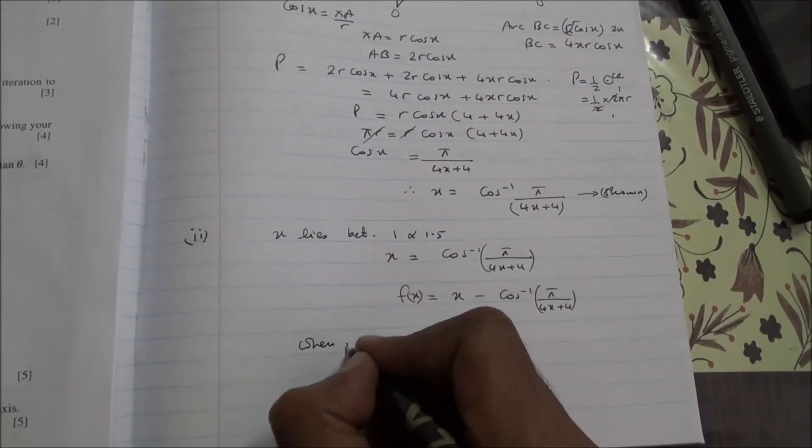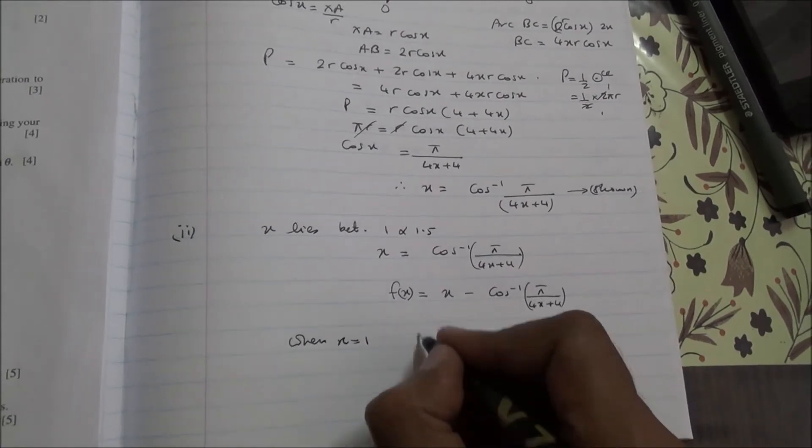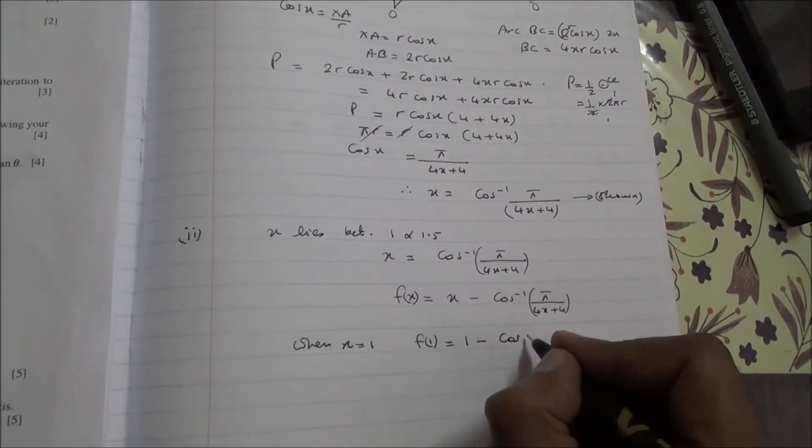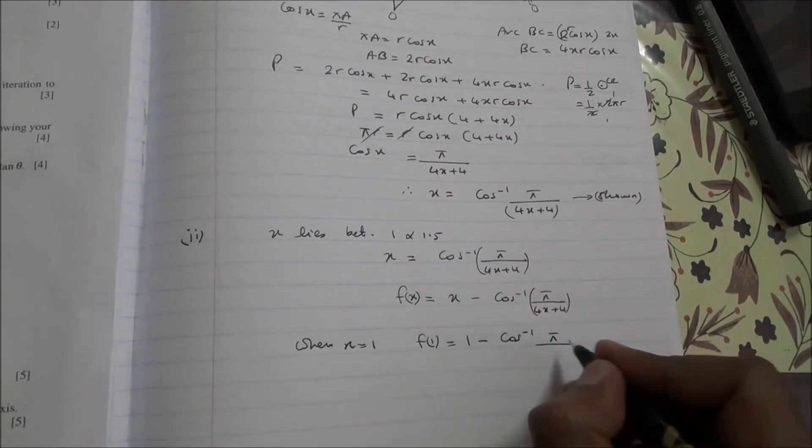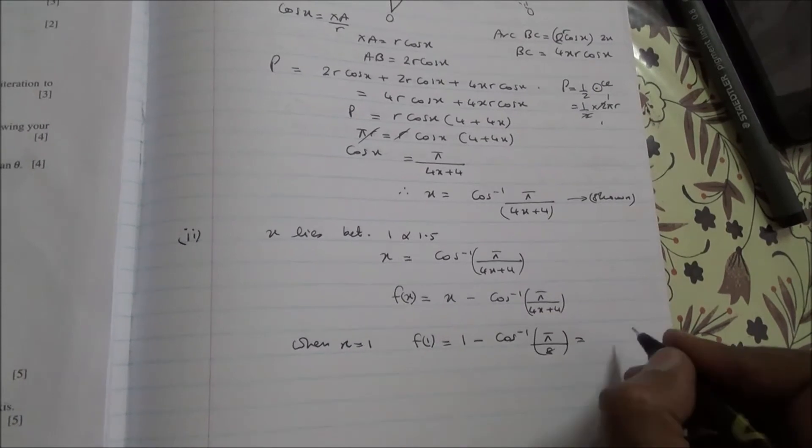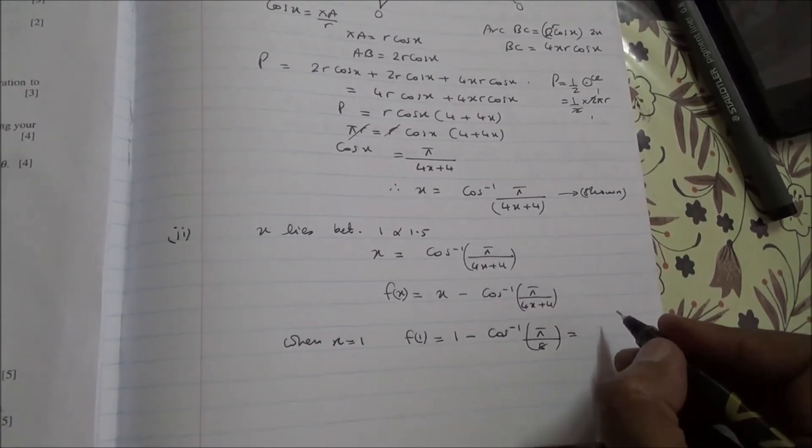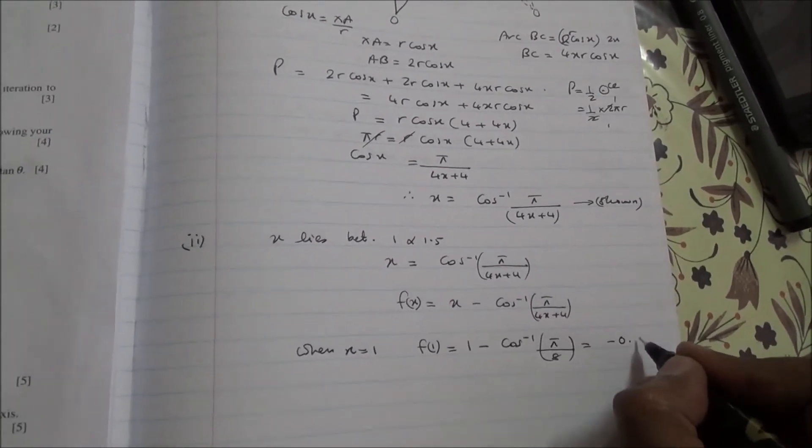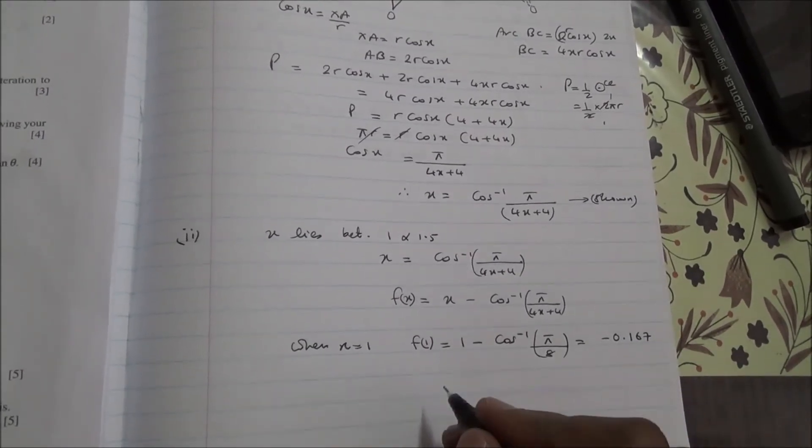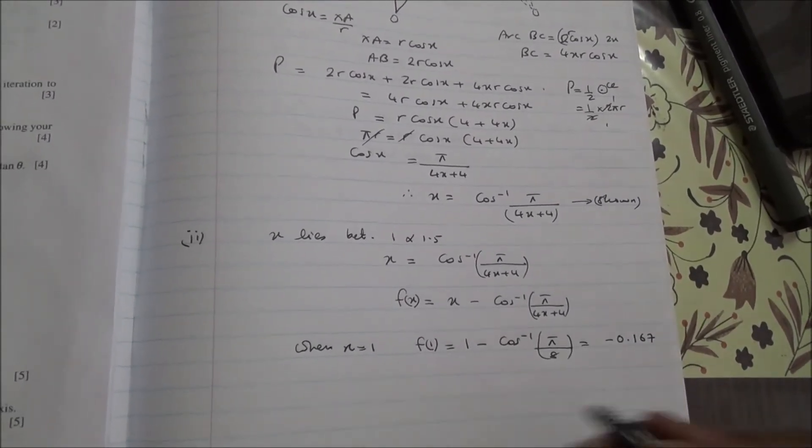So when X is equal to 1, you're going to have to find F(1), which is 1 minus inverse cos of π upon 4 times 1 plus 4 is 8. And if you work this out in your calculator, you'll end up with minus 0.167 to three significant figures.